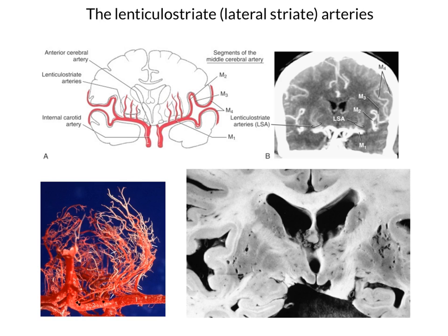The middle cerebral arteries run laterally deep in the hemisphere, and as they pass the deep nuclei they send off many tiny perforating branches which pass through the lentiform nucleus and into the internal capsule, sometimes even penetrating into the thalamus. These are the lenticulostriate vessels, and they are quite numerous.